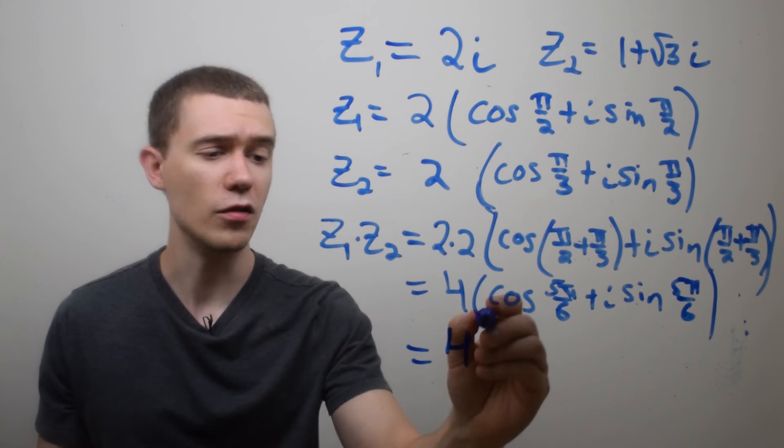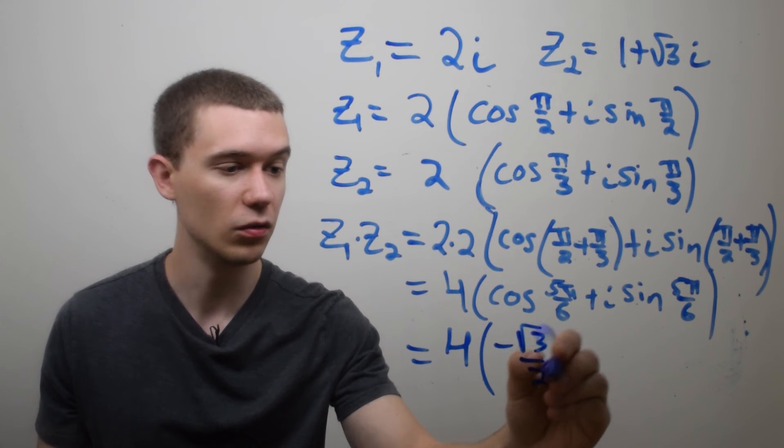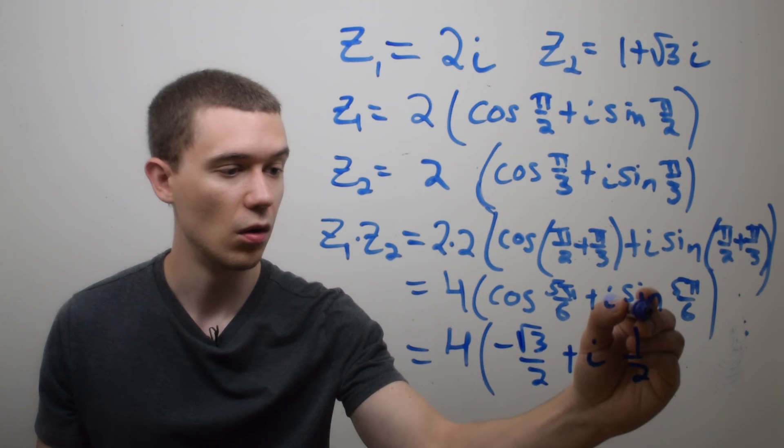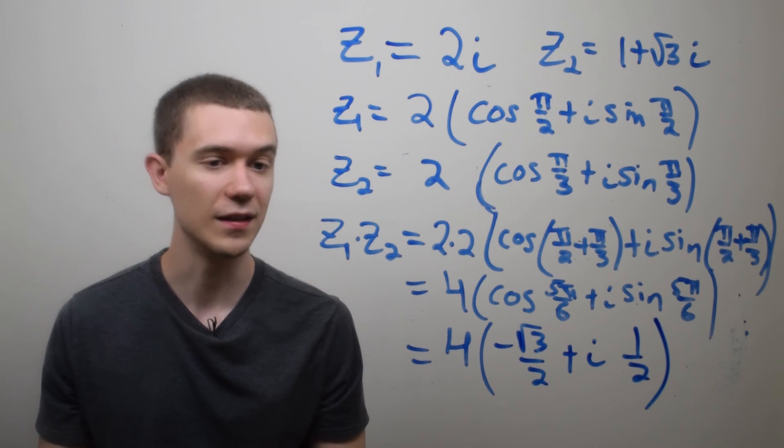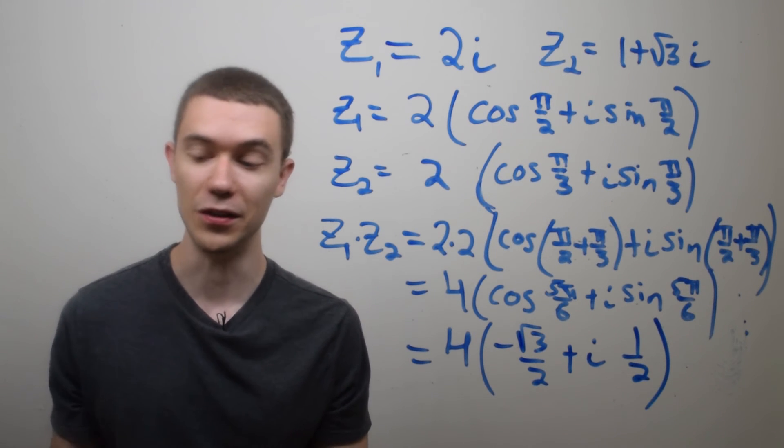And you can evaluate here if you'd like cosine of 5π/6. I believe that's going to be negative √3/2 plus i sine of 5π/6 is going to be 1/2. And so this is the polar form of the complex multiplication z1 times z2.